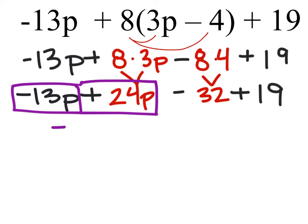So just for the p's, we've got this negative 13p, and I'm going to add another 24p's. This will tell us how many p's there are, so negative 13 plus 24 would give us 11 positive p's.